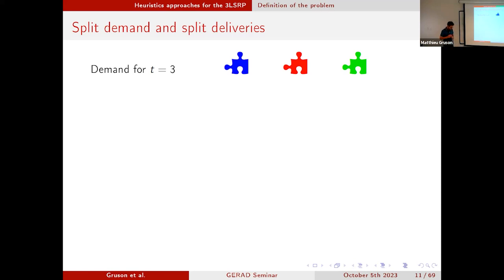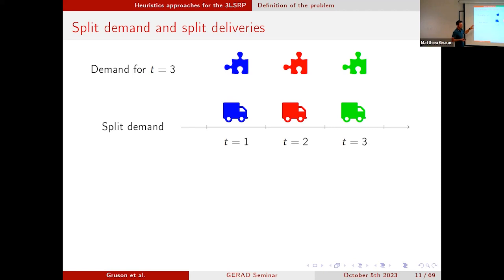Let's consider for a specific retailer a demand for one blue item, one red item, and one green item in, say, period three. Split demand means this demand for three items can be sent in different time periods. For instance, I would send the blue item in period one, the red item in period two, and the green item in period two.